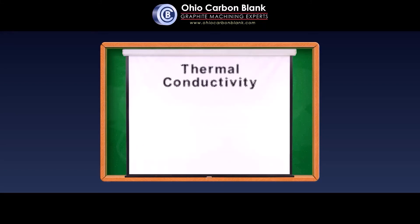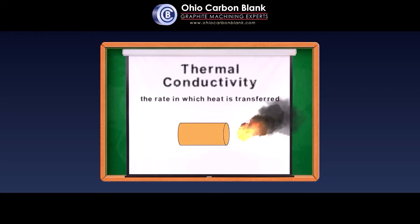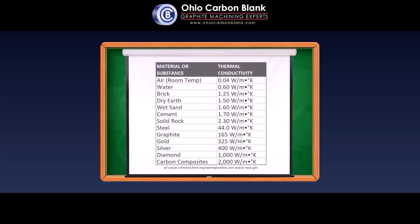Graphite also possesses remarkable heat transfer properties, and this is attributed to the material's thermal conductivity. Many graphite materials, both natural and synthetic, have conductivity values as high as a couple hundred watts per meter degree Kelvin, which is impressive in itself. However, some composite materials are now registering values as high as one to two thousand. For perspective, air and water both have conductivity values that are less than one watt per meter degree Kelvin.